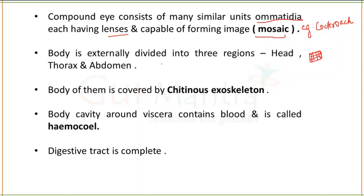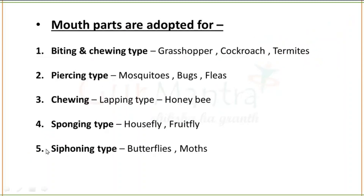The body is externally divided into three regions: head, thorax, and abdomen. The body has a cutaneous exoskeleton present. The body cavity around the viscera contains blood and is called the hemocoel. The digestive tract is complete.